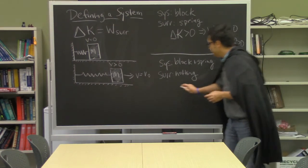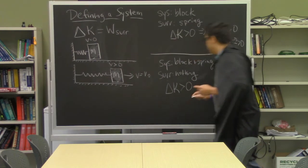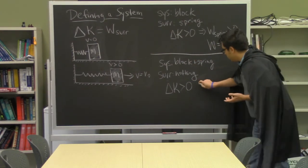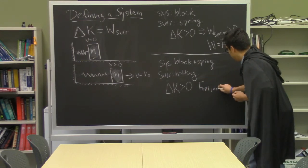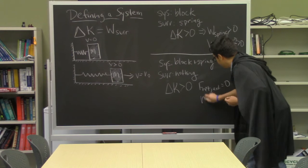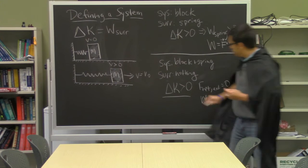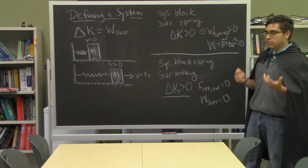Because the change in kinetic energy of the block is still greater than zero, but there's nothing in the surroundings, so there's no net force that's external to the system, and so there's no work done by the surroundings. And yet the kinetic energy of the block still changes, it still gets larger, and so the question is why, what's happening here.